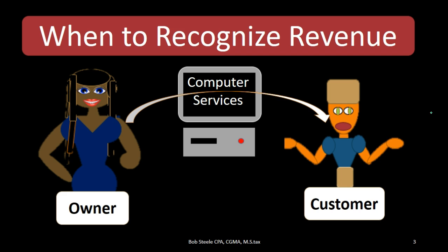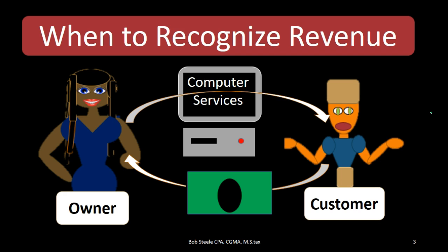Of course, we can think of a situation where the customer pays us at the same point in time. In that case, we are recognizing revenue at the same point in time we received cash. However, there's a subtle difference: we're recognizing the revenue at this point in time because it's when we did the work, not because we received the cash.